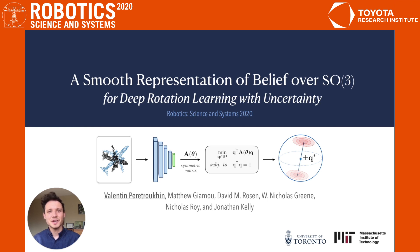Hello, my name is Valentin Periotruchan and on behalf of my collaborators at the University of Toronto and MIT, I'd like to present our work entitled A Smooth Representation of Belief Over SO3 for Deep Rotation Learning with Uncertainty.